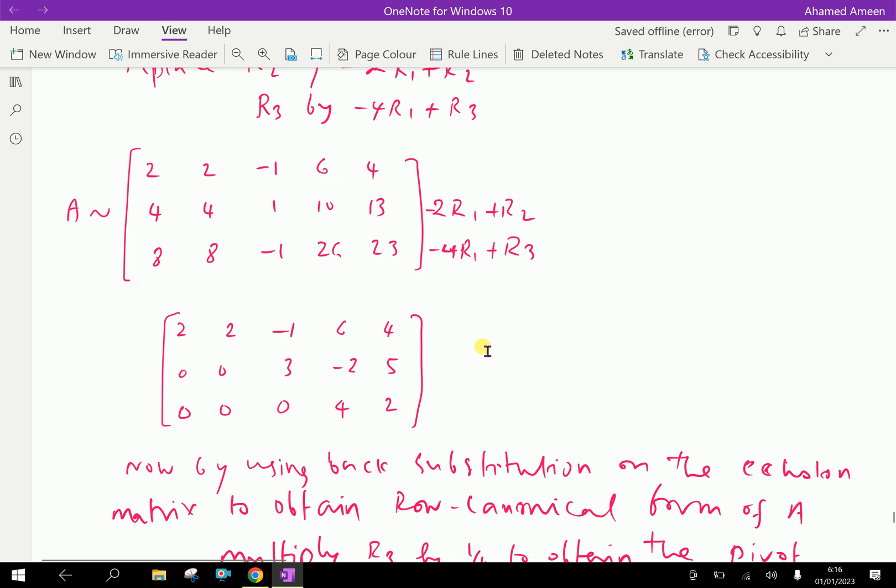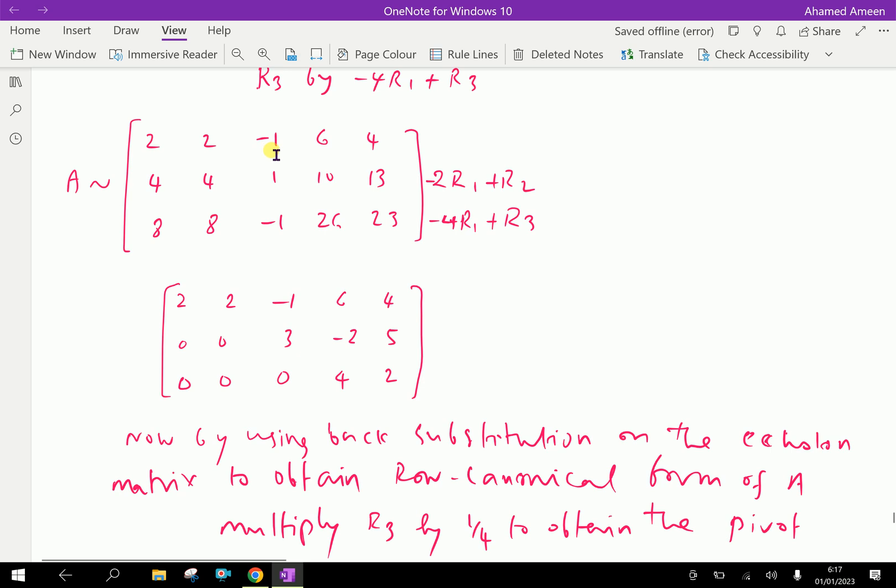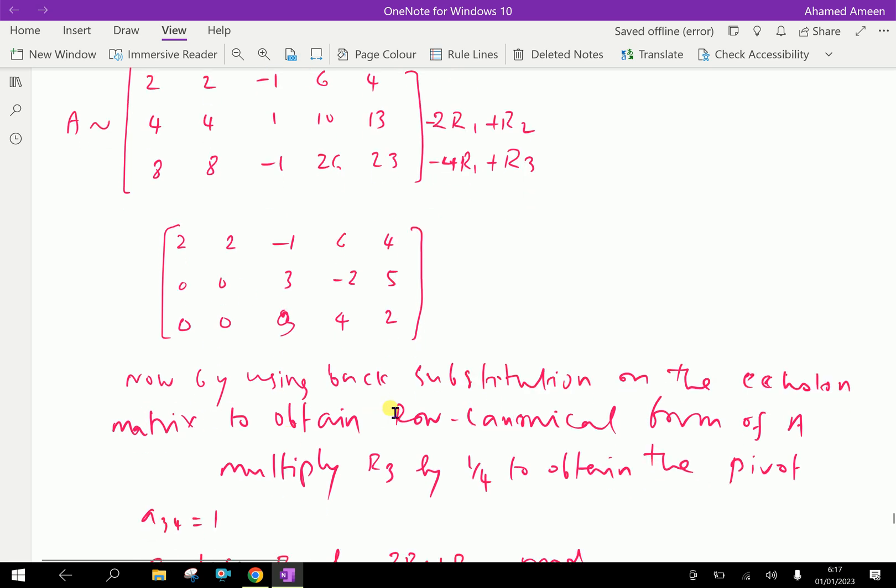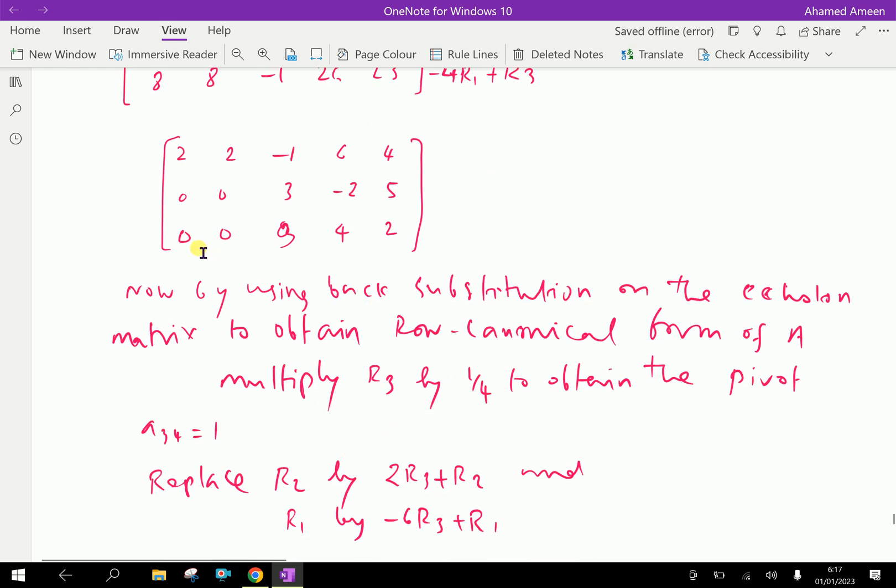Now by using back substitution on the echelon matrix to obtain row canonical form of A, multiply R3 by 1 by 4 to obtain that pivot a34 equal to 1.